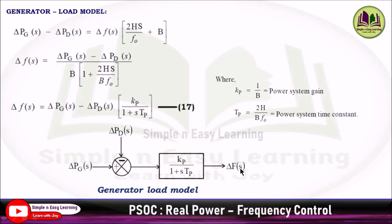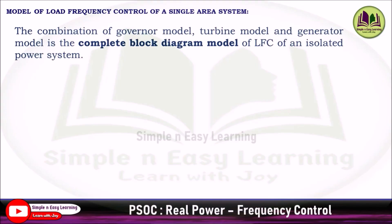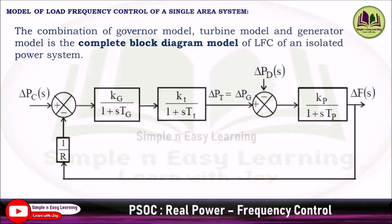We have now discussed the speed governor model, the turbine model, and the generator-load model. Combining all three gives the complete block diagram known as the Load Frequency Control (LFC) of a single area system. The input is del_Pc (speed changer input), followed by the governor block Kg/(1+s·Tg), then the turbine block, then the generator-load model. This is the complete block diagram model of LFC of an isolated power system.